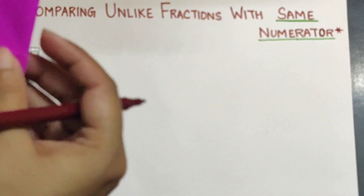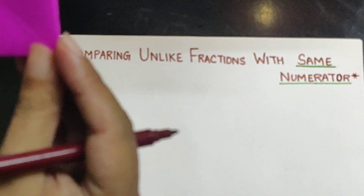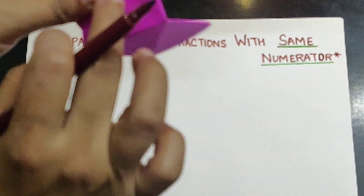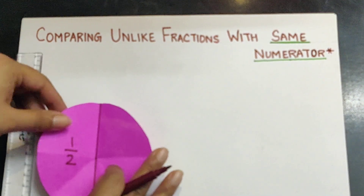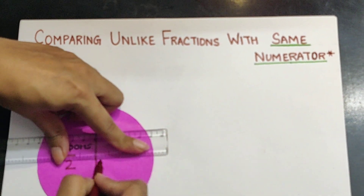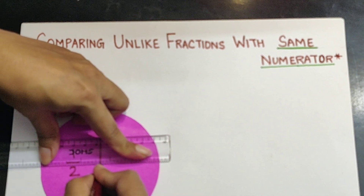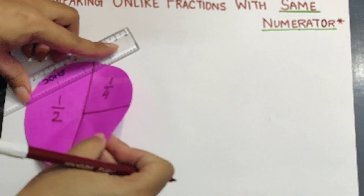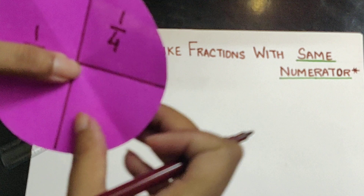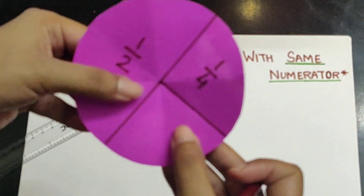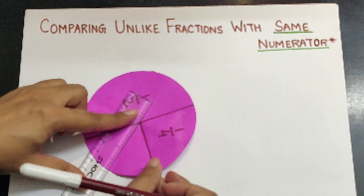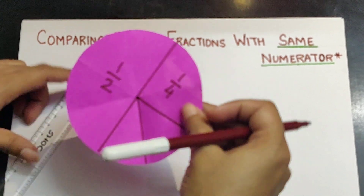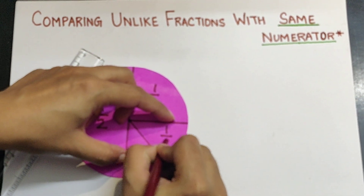Now if we look at this much part — one such part represents 1 upon 4, because there are four equal parts: 1, 2, 3 and 4. Now this part is 1 upon 4. But when this 1 by 4 part was further divided into two equal parts, then one such part represents 1 upon 8. So this represents 1 upon 8.